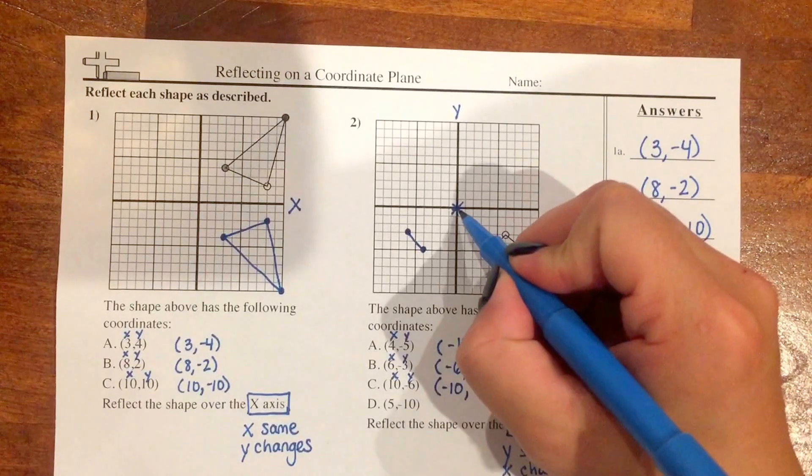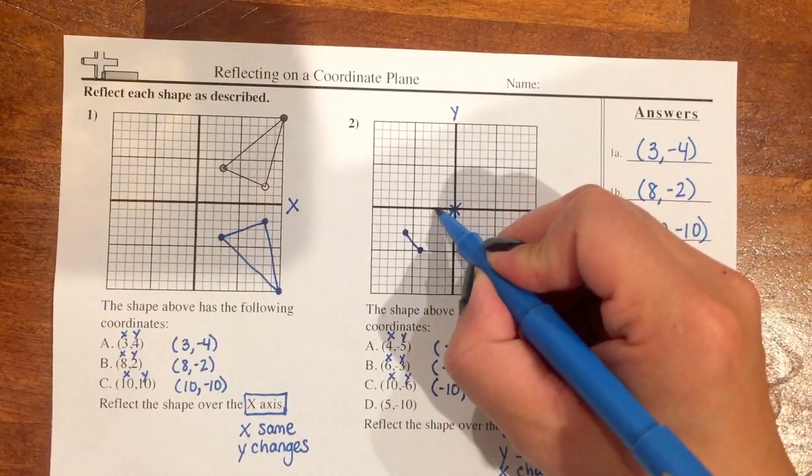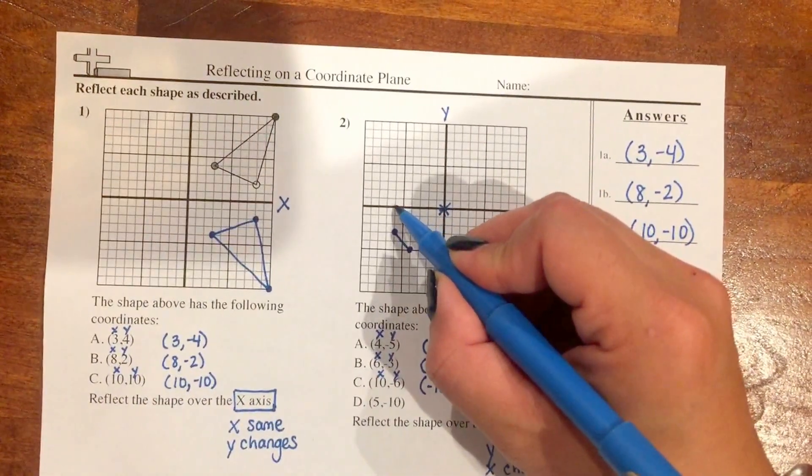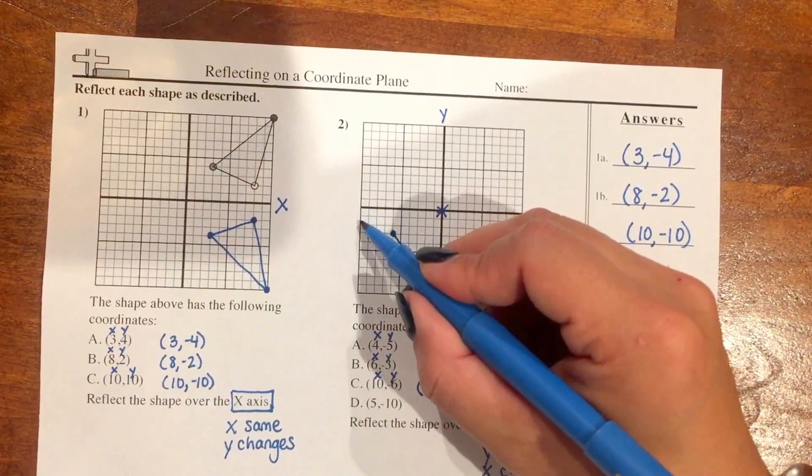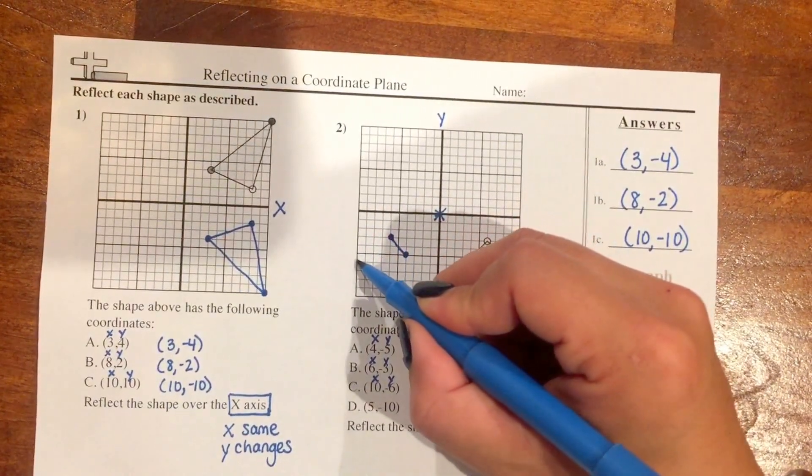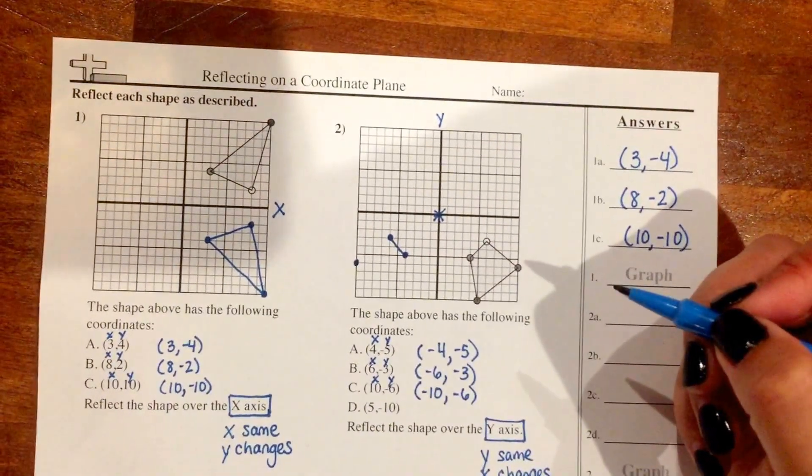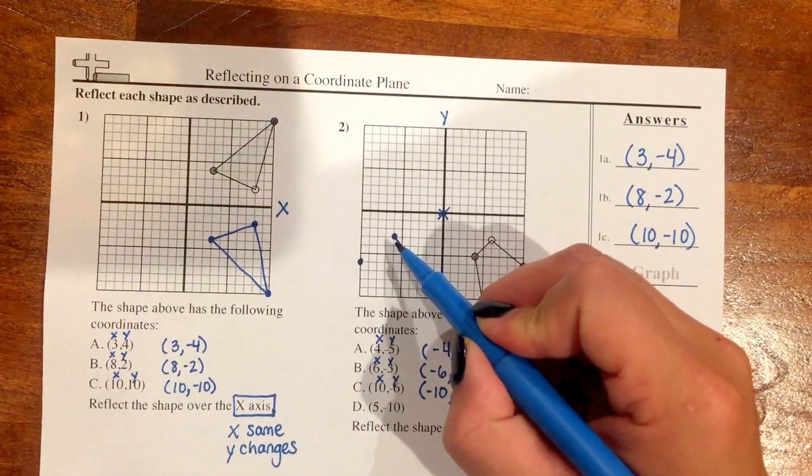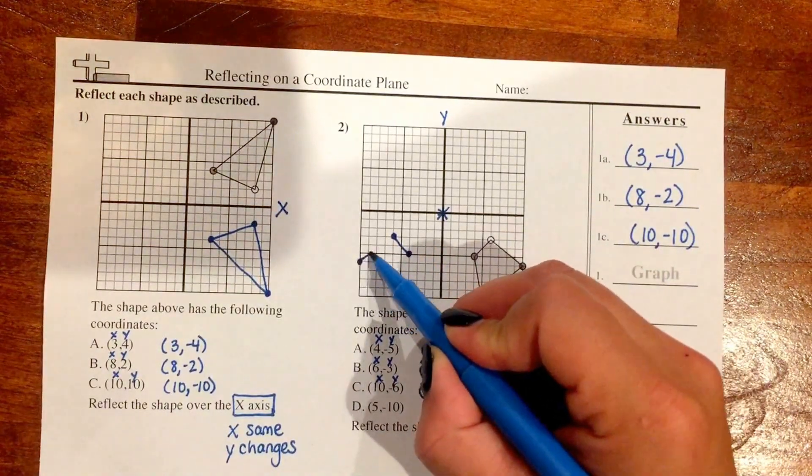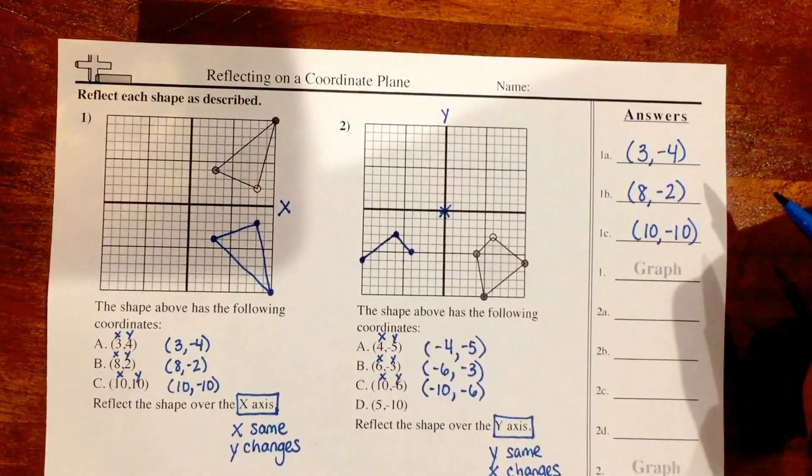So let's graph this one. 1, 2, 3, 4, 5, 6, 7, 8, 9, 10 and 1, 2, 3, 4, 5, -6. And same thing with graphing, I'm going to go from the point I previously did and connect those two lines.